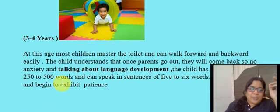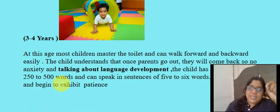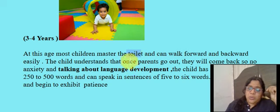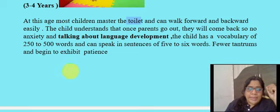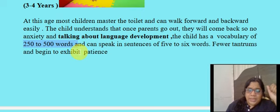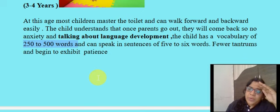Coming to three to four years: at this age most children master toilet training and can walk forward and backward. Apart from vocabulary, it is also important to note that children learn 250 to 500 words in one year, and tantrums become a little less.